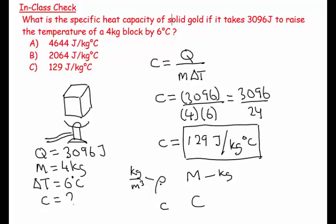And the specific heat capacity is in joules per kilogram degree C whereas the heat capacity is in joules per degree C because it doesn't matter what the mass is, it's the sample. So there we have it.